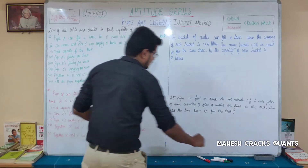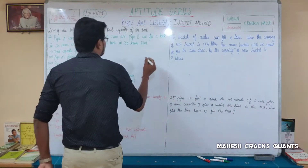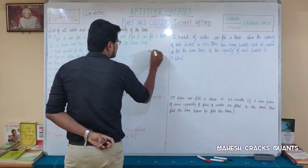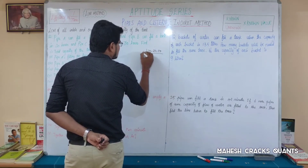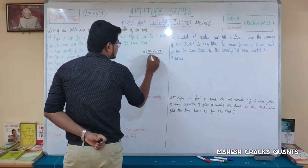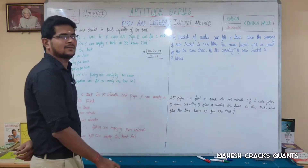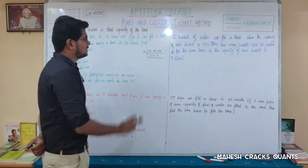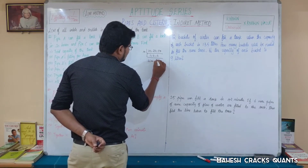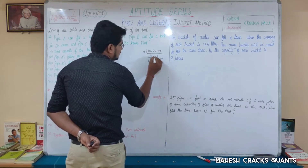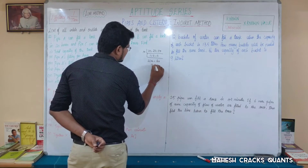First, find the LCM of the given values: 10, 20, and 30. Taking 10 outside, the remainders are 1, 2, and 3. Multiplying: 10 × 2 = 20, 20 × 3 = 60. So the LCM is 60. This is nothing but the total capacity of the tank — 60 units.